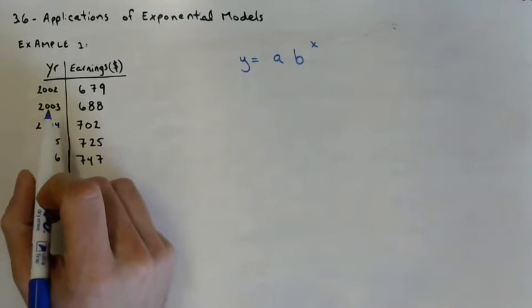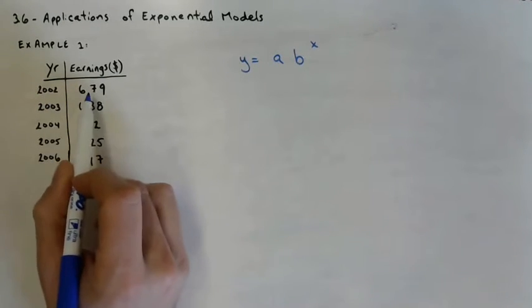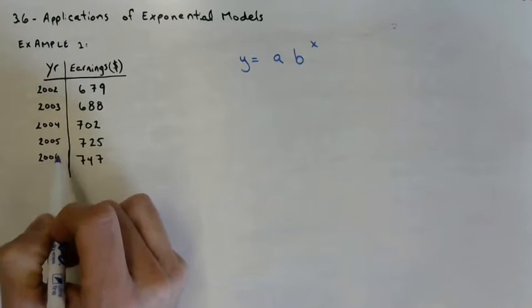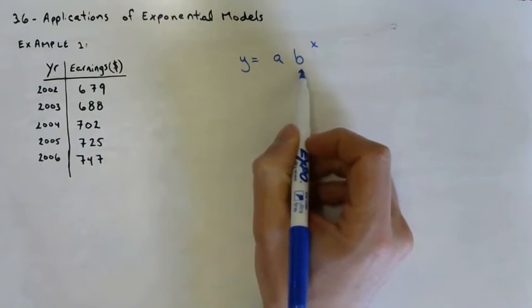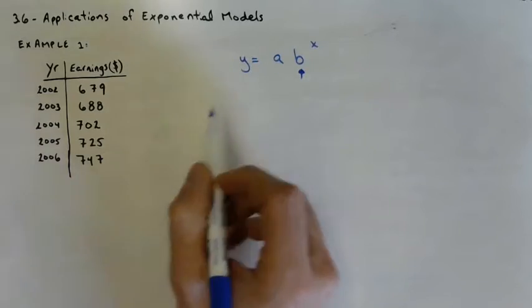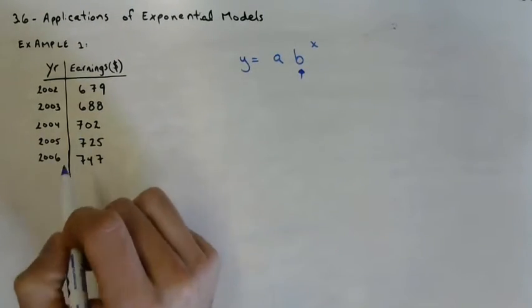So from here we're counting the years starting at 2002, so 2002 is our starting amount, and then the years after that would be year one, year two, year three, year four. But we need this base, which is the growth factor. We can see the earnings are going up, but how do I determine what my growth factor is just based on this table of values?